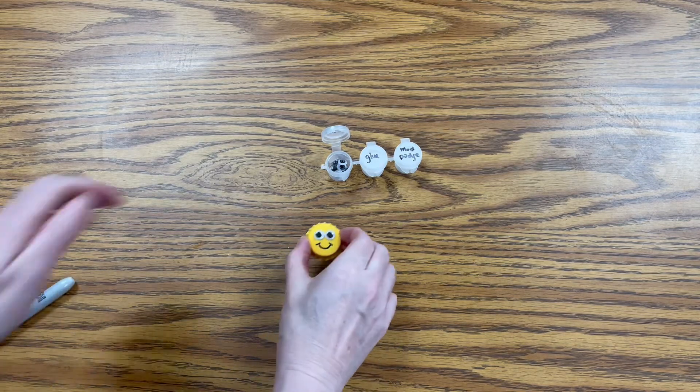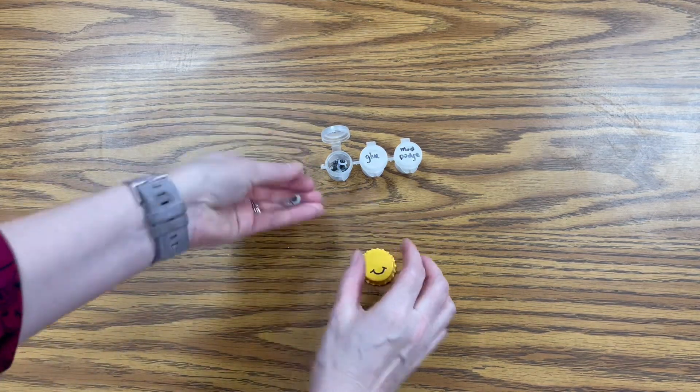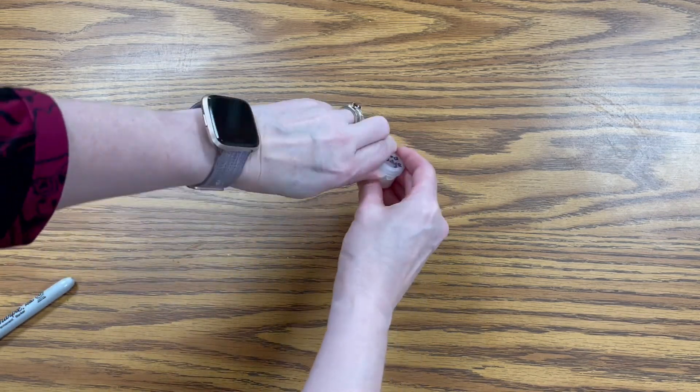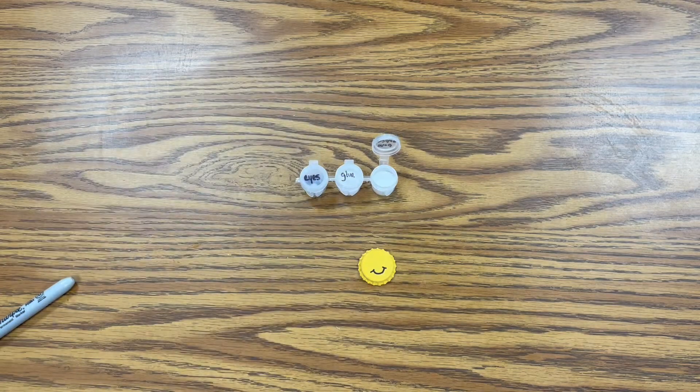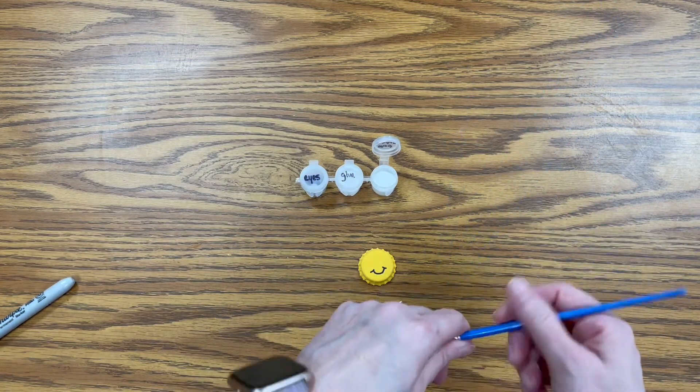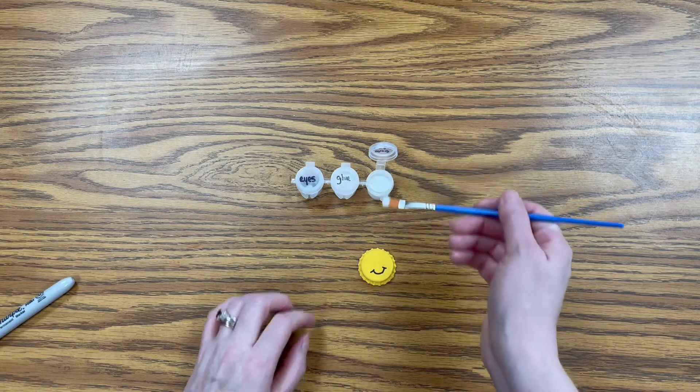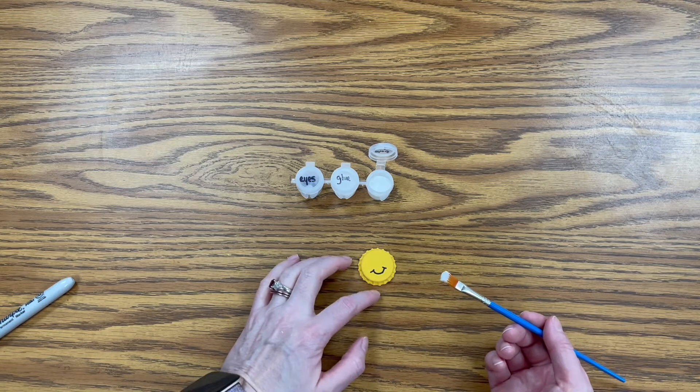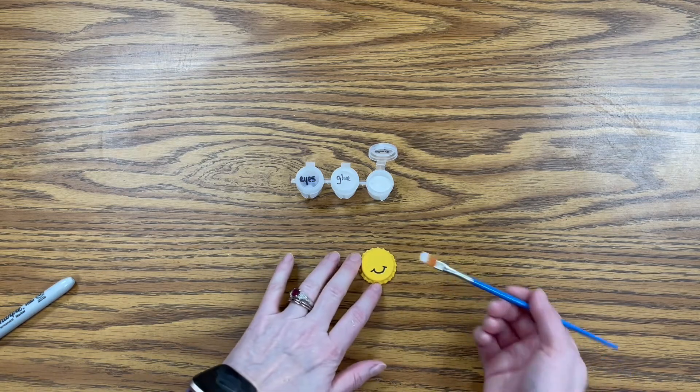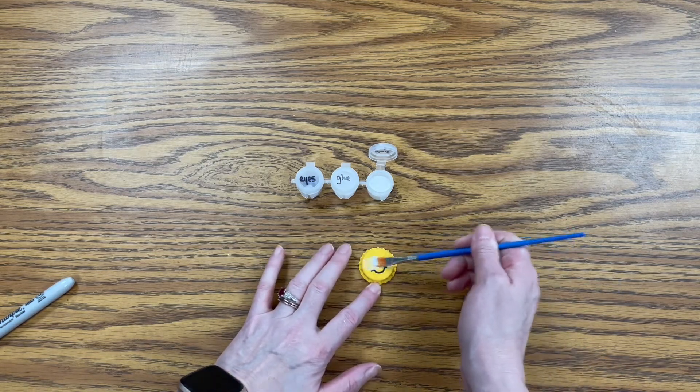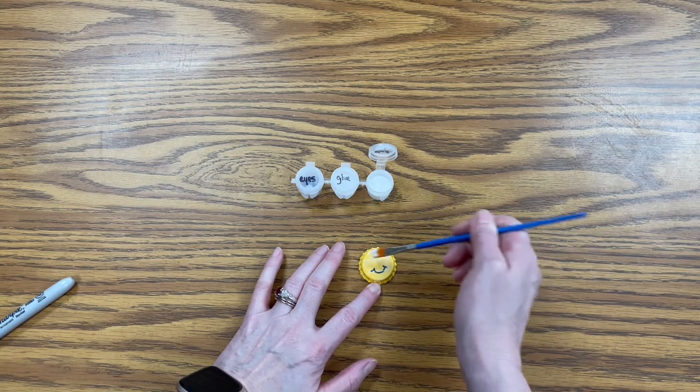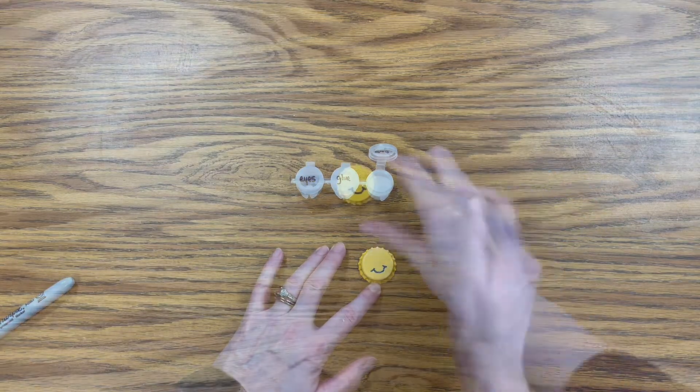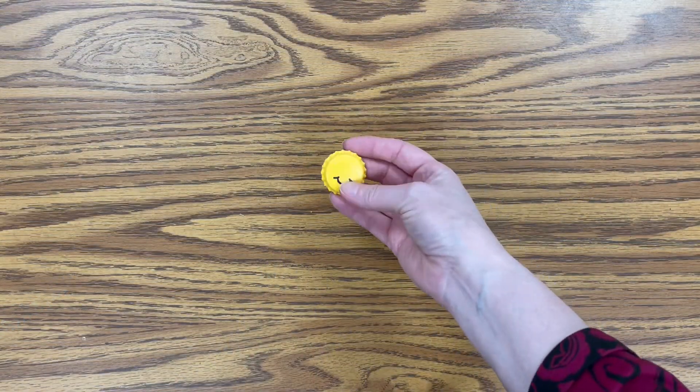Then what we're going to do is take the googly eyes back off. We don't need them yet. You're going to take your mod podge and your paintbrush, and we're going to coat the top of this with a layer of mod podge. This is going to seal in the paint and the sharpie, so that's why we're not putting the eyes on yet. Put the coat on there and then let that dry before we go on to the next step.